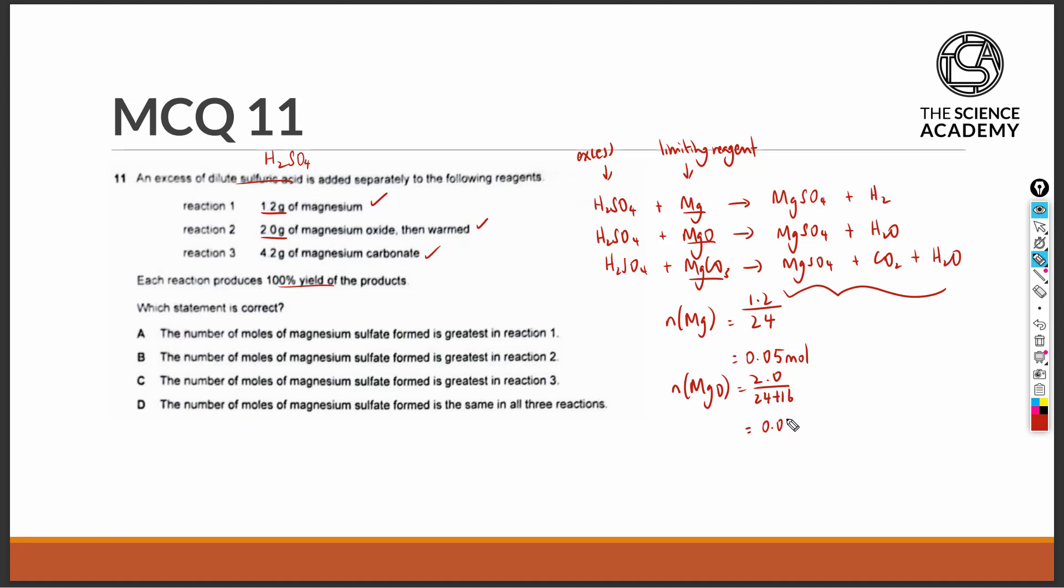The number of moles of the last reaction is 4.2 divided by the molecular mass of MgCO3, which will also give us 0.05 moles.